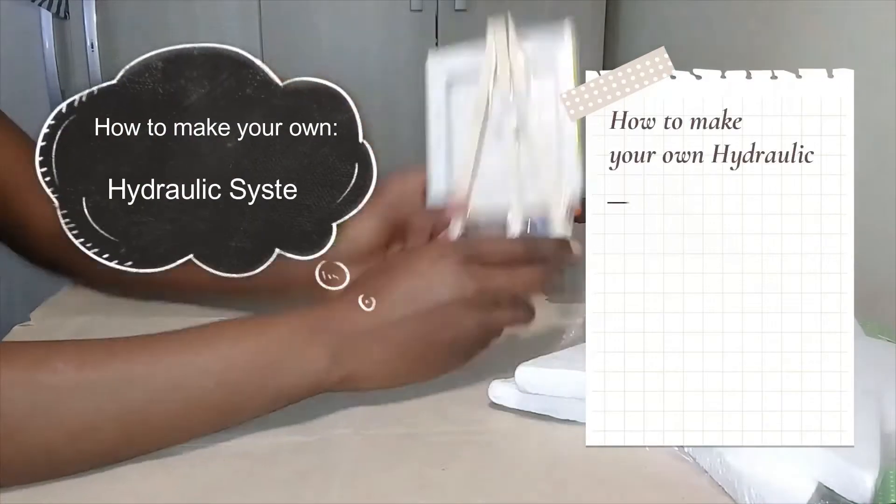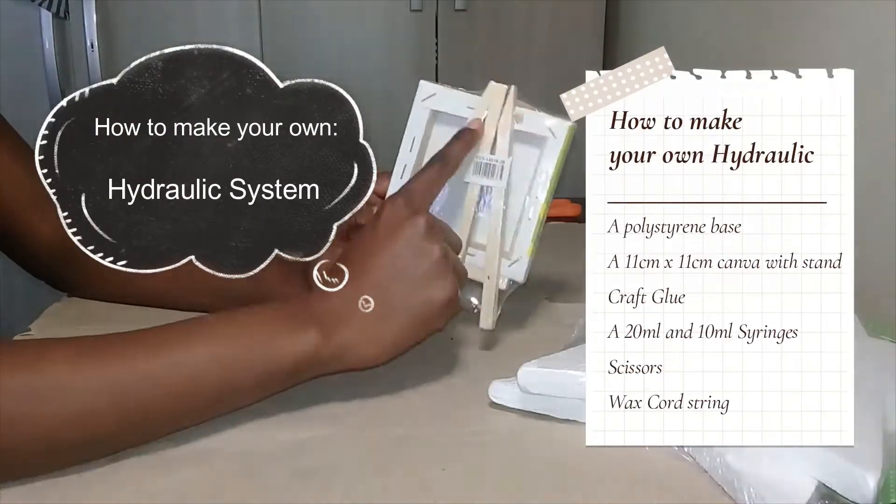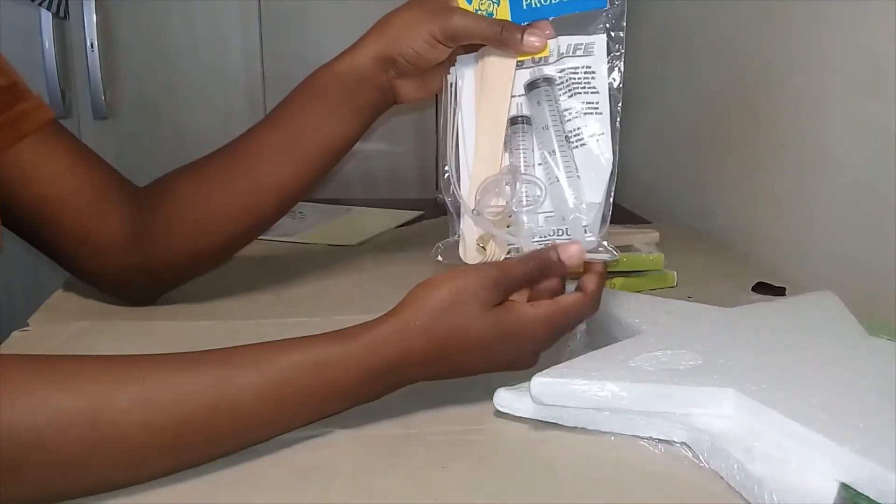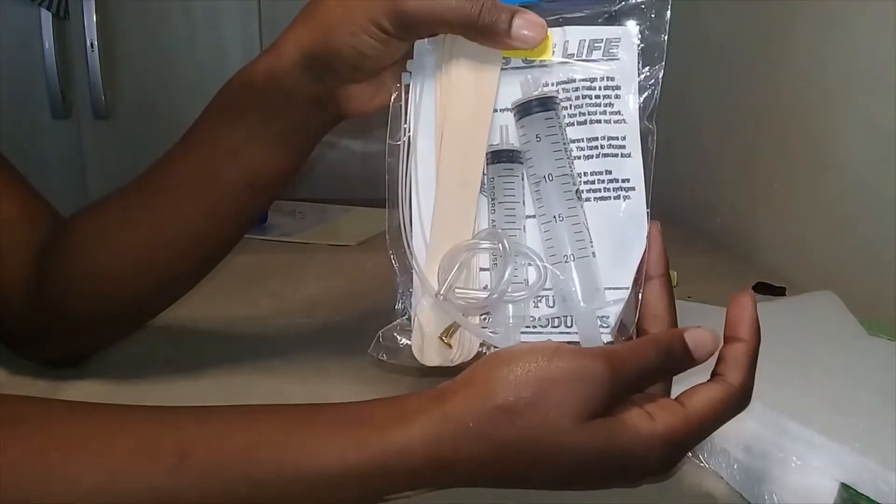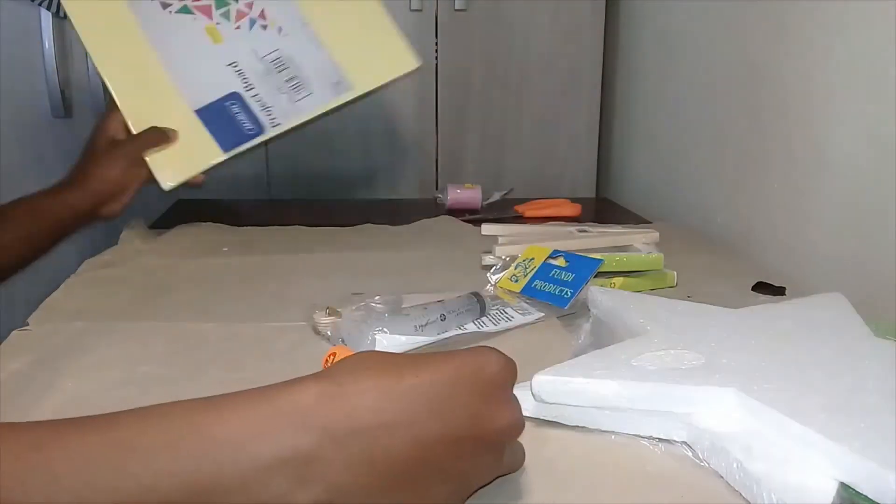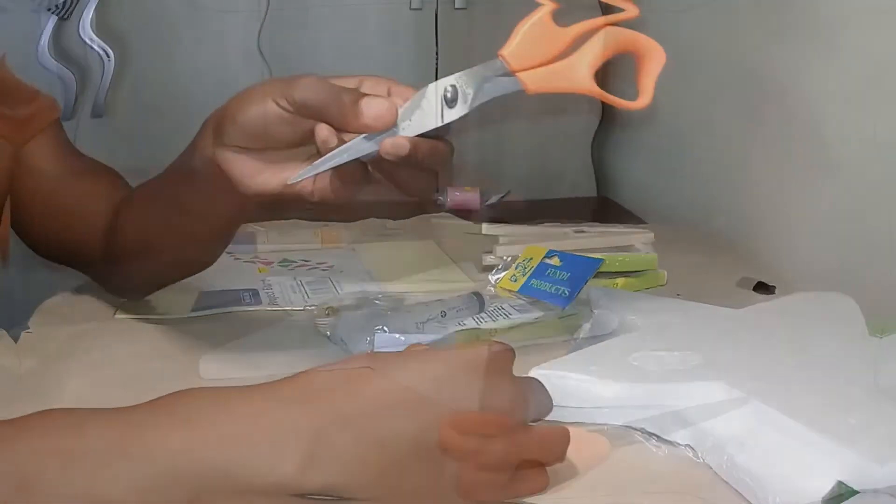In this lesson, we're going to make a pneumatic and hydraulic system using a polystyrene base, syringes, craft glue, scissors, and string to keep it together.